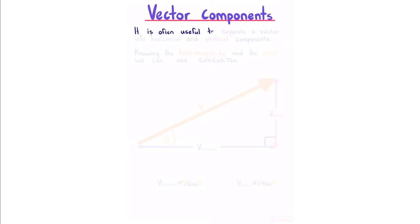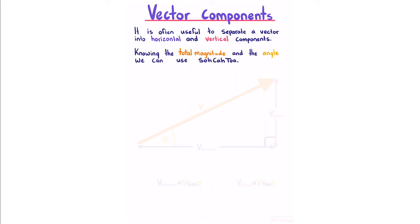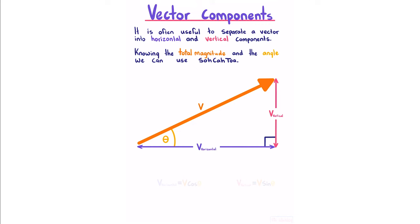Vector components. It is often useful to separate a vector into horizontal and vertical components. Knowing the total magnitude v and the angle theta to the horizontal, we use SOH-CAH-TOA. Using the CAH relationship, cosine(theta) equals v_horizontal divided by v, so v_horizontal = v·cos(theta). For v_vertical, using SOH: sine(theta) equals v_vertical divided by v, so v_vertical = v·sin(theta).